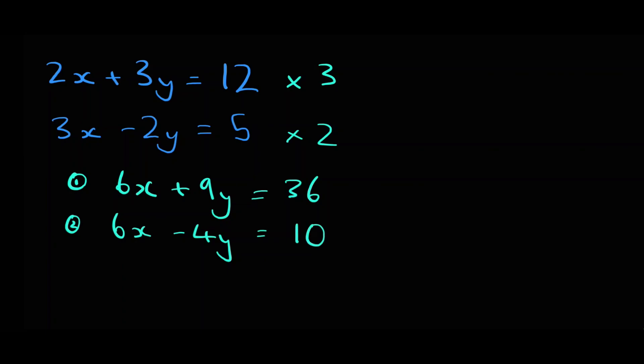Now the x terms are the same so we can eliminate them. We subtract equation 2 from equation 1. So 6x minus 6x is 0 and we can leave it out. 9y minus negative 4y is 13y, and 36 minus 10 is 26. So now we have 13y equals 26, and dividing both sides by 13 gives y equals 2.